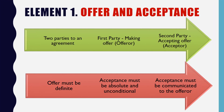Element 1: Offer and Acceptance. Every agreement must have offer and acceptance. Two parties to an agreement are the offerer and the acceptor. The offerer is a person who is making the offer and the second party, the acceptor, is a person who is accepting the offer. The offer must be definite and acceptance must be absolute and unconditional.